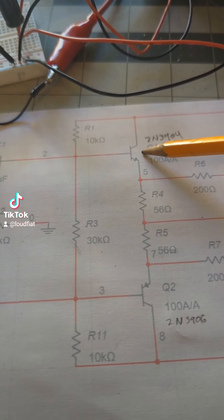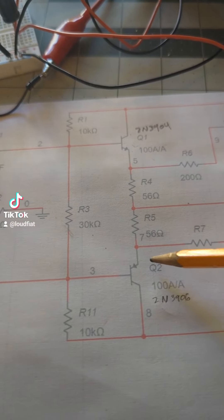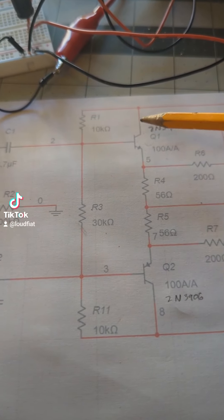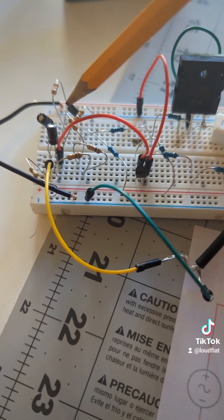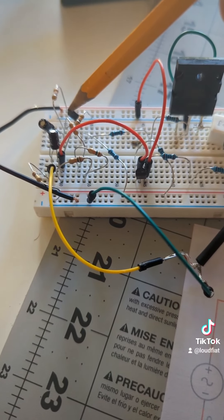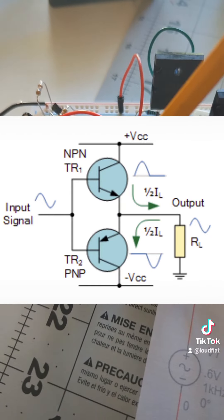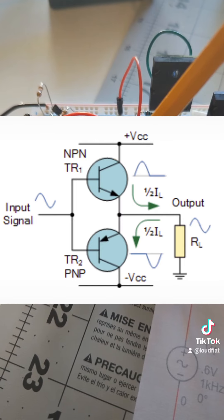We have an NPN—negative, positive, negative—and PNP—positive, negative, positive. So these are two types of transistors that have energy flowing in different directions. The idea is that within the AC signal, half of the signal goes through this guy, the other half under zero volts. So when we're talking about negative voltage goes into this guy.